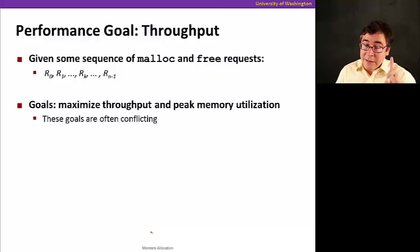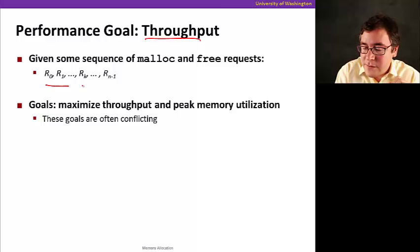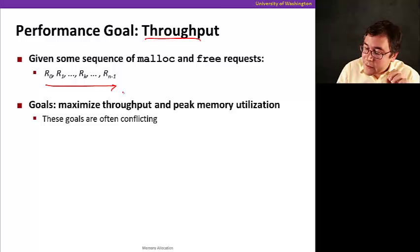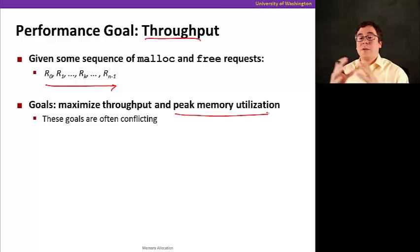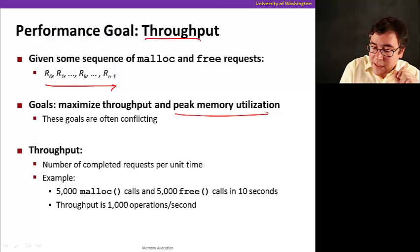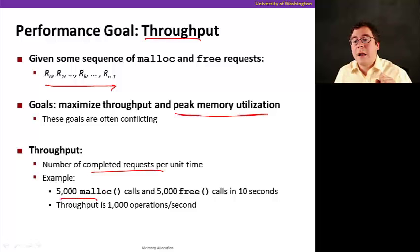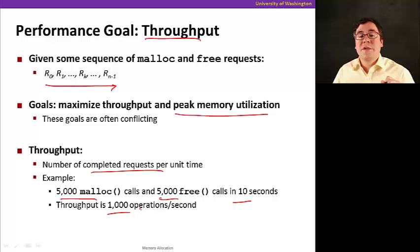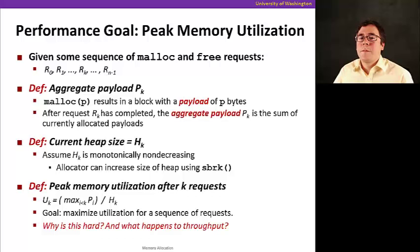And now, from the performance point of view, there's two components. The first one is throughput. And that means the following. Given a sequence of malloc and free requests, the goal is to maximize throughput. And the other component, by the way, of performance is peak memory utilization. We want to use memory. We want to have as few holes as possible. We want to use as much memory as possible. And these goals are often conflicting, because if you want to maximize throughput, you want to do things very, very fast. Therefore you can't afford to do very sophisticated work in managing memory to increase peak utilization. So the throughput here is the number of completed requests per unit time. For example, you want to do 5,000 mallocs and 5,000 free calls in 10 seconds. That's throughput. And what we're doing here is it will be a total of 1,000 operations per second, because we had 10,000 operations in 10 seconds, 1,000 operations per second.